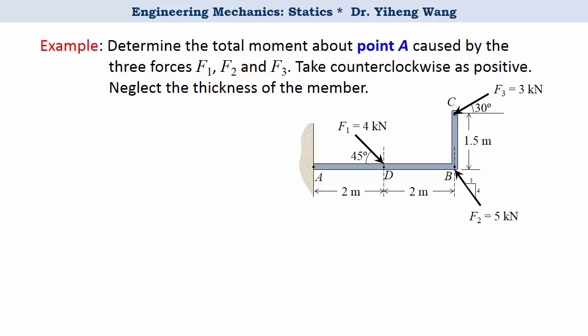In this example we need to determine the total moment caused by the three forces F1, F2, and F3 about point A. We have several options in terms of how to solve this problem. We can use the vector formulation that we learned before, but since this is a 2D problem, using scalar formulation is probably easier and more straightforward.